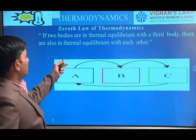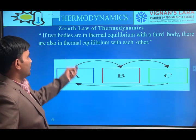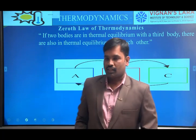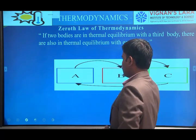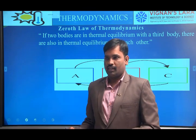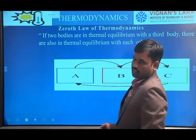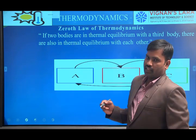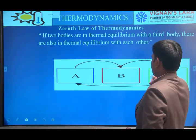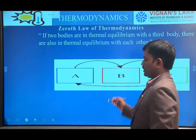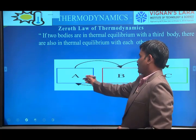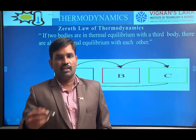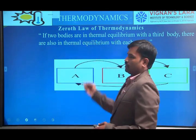Zeroth law of thermodynamics — if you consider three bodies A, B, and C, and want to test whether they are in thermal equilibrium: if body A and body B are in thermal equilibrium, and body A and body C are also in thermal equilibrium, then automatically body B and body C are also in thermal equilibrium. That is the zeroth law of thermodynamics.